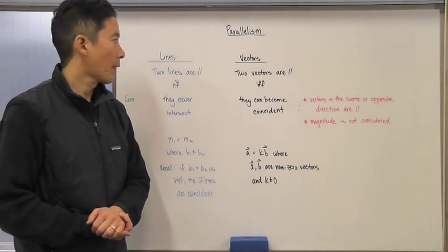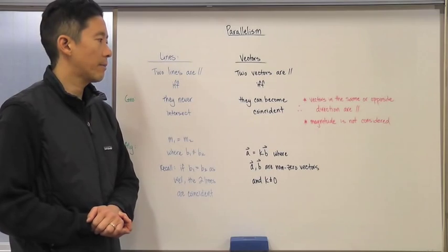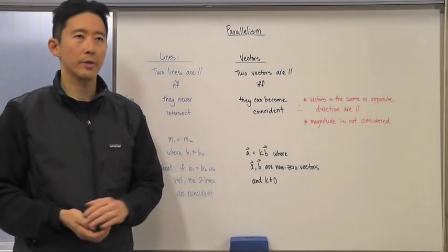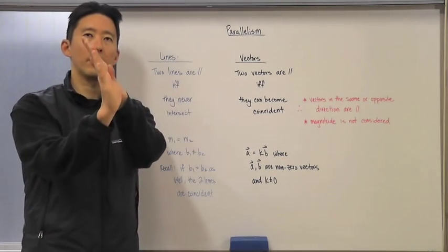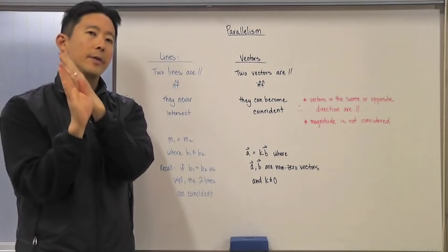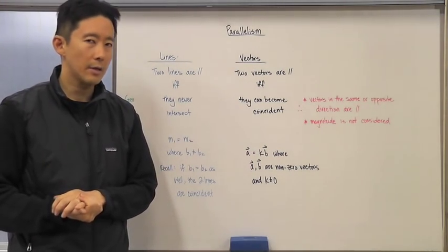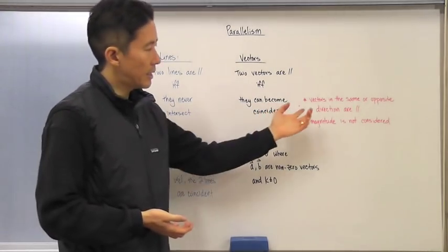We must say that two vectors are parallel if and only if they can become coincident. In other words, being that location doesn't matter, so long as we can put them right on top of each other and they overlap perfectly, then we can say those two vectors are indeed parallel.